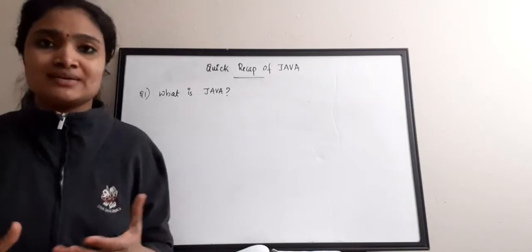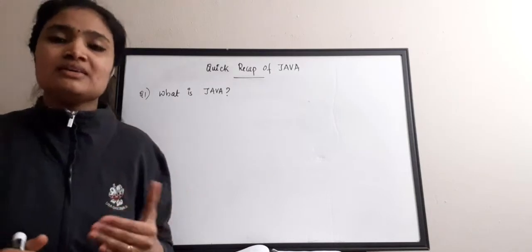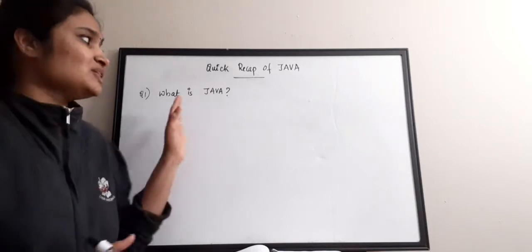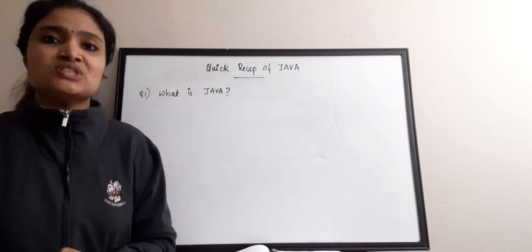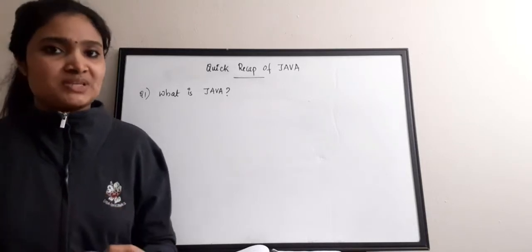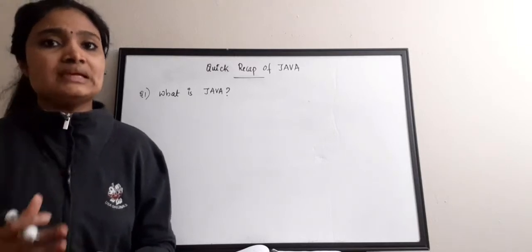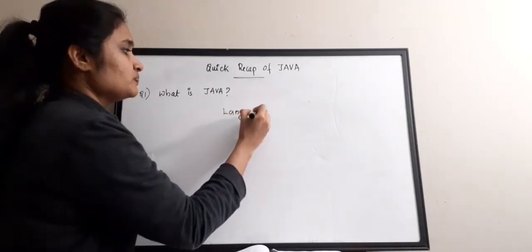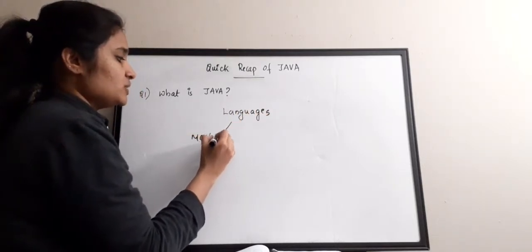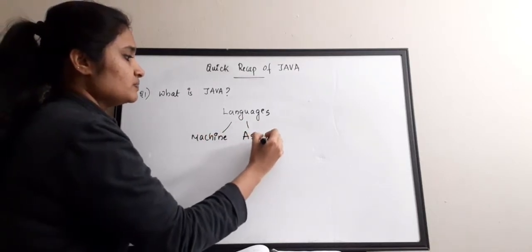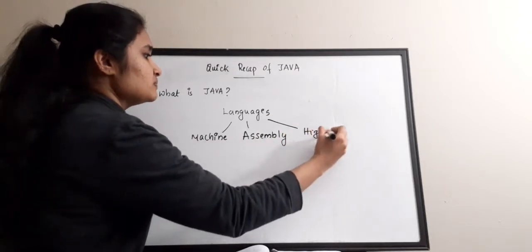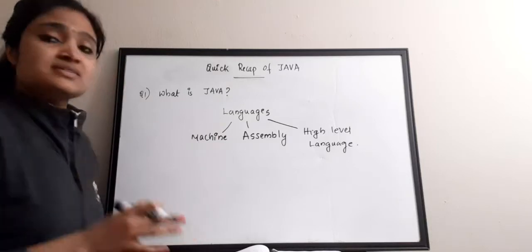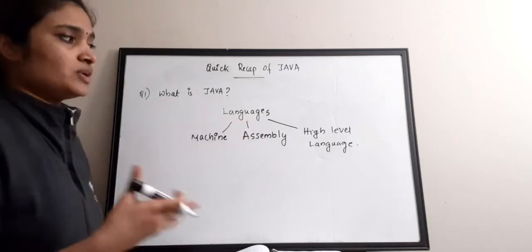In this video, which is Part 1, we are going to see the very basic questions from Java programming language. Even if you don't know anything about Java, you can start watching this series. The first question is: What is Java? Now, if you take all programming languages and classify them, we can have three categories: machine language, assembly language, and high-level programming languages.